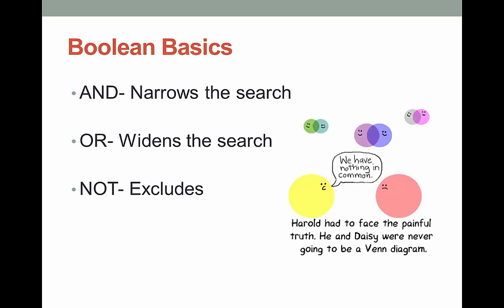When you use the AND operator, you're narrowing your search. You use AND with terms that are not similar, like libraries and dogs. When you use OR, you widen your search. This is great to use for synonyms, like cars or automobiles.